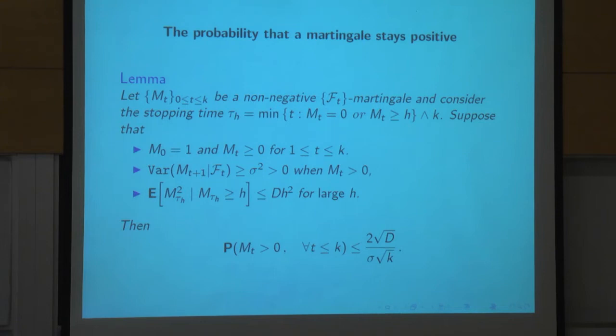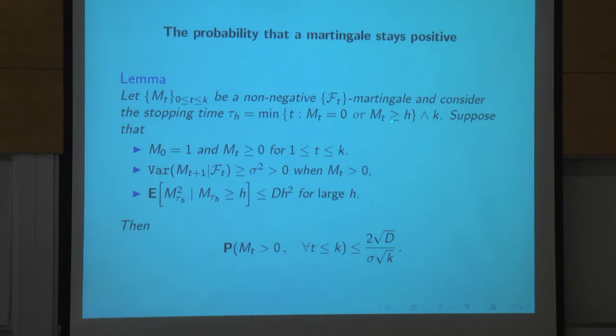The assumptions: the martingale starts at one, can't become negative, is absorbed at zero, and the variance is bounded below by some sigma². We also assume the second moments can't become too wild. We run the martingale until it either reaches zero or exceeds height h, also stopping at time k. We assume that at this stopping time we haven't jumped too far high — the second moment is at most a constant times h². Under these conditions you get a lower bound where the probability is bounded by constant over root k.